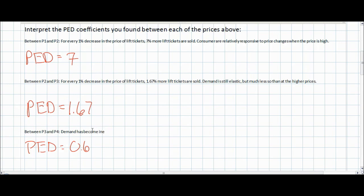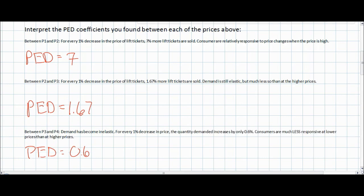Finally, between 30 francs and 10 francs, demand has become inelastic because the coefficient is now less than one. For every one percent decrease in price, the quantity demanded only increases by 0.6 percent. Therefore we can conclude that at lower prices, consumers of ski lift tickets in Switzerland are much less responsive than they are at higher prices.